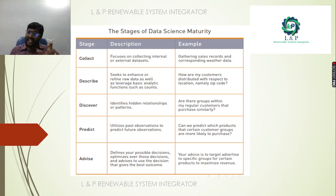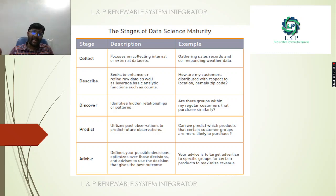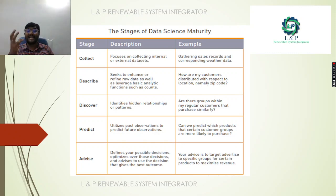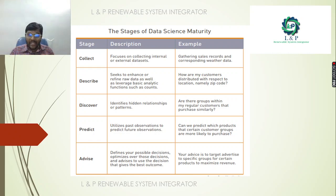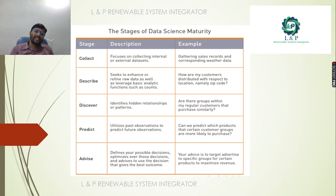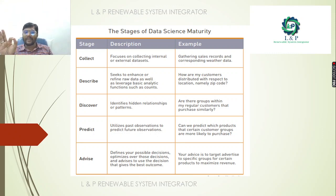The different stages of data science maturity in detail: Collecting focuses on collecting internal and external datasets such as sales records or weather data. Describing seeks to enhance or redefine raw data and leverage basic analytical functions like counts — for example, how are my customers distributed by location or zip code? Discovering identifies hidden relationships, patterns, or groups — for example, are there groups within regular customers that purchase similarly? Predictability utilizes past observations to predict future ones — for example, which product group is a customer more likely to purchase? Advising defines possible decisions, optimizes over those decisions, and advises the decision that gives the best outcome — for example, target a specific group for a certain product to maximize revenue.